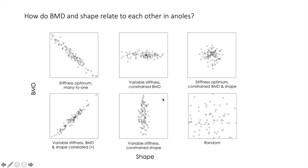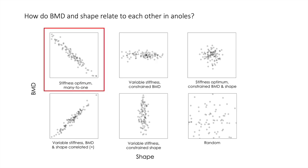At this point we can start asking some questions. First, how do bone mineral density and shape relate to each other in Anolis? If we are in the case of a many-to-one mapping pattern, we expect BMD and shape to be negatively related with a stiffness optimum. But we could obtain many other patterns: variable stiffness with positively correlated BMD and shape, variable stiffness with constrained BMD, constrained shape, or a stiffness optimum but with both BMD and shape constrained, or simply random points.